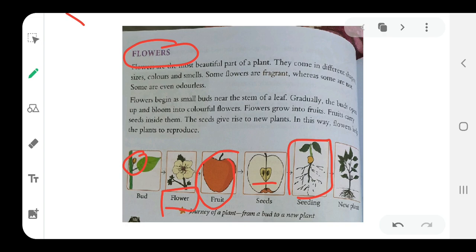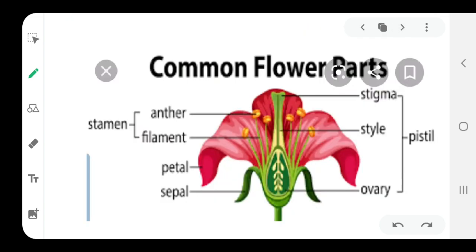Now, different parts of the flower. There are different common parts: sepals, petals, stamen, and pistil. Firstly, what are the sepals? Sepals are green in color and they protect the flower when it is in the bud shape.